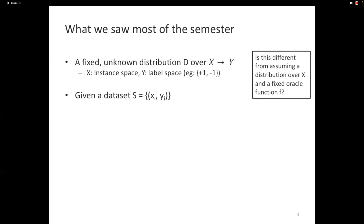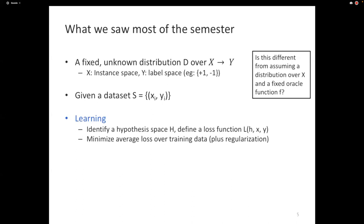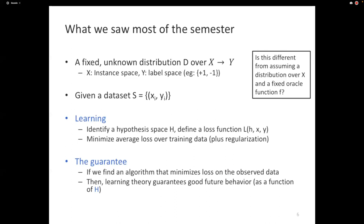We're given a data set consisting of x_i, y_i, and the goal of learning is to identify a hypothesis, define a loss function. You can minimize the average loss over the training data or maximize the likelihood over the training data. You might throw in regularization, you might throw in a prior. One way or another, the guarantee typically takes the form of if we find a hypothesis that minimizes the loss over the observed data, then the ideas that we encountered in learning theory guarantee that the future behavior of this model will be good.